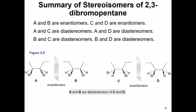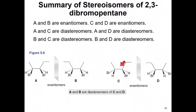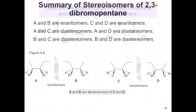If you analyze the structures, A and C are not mirror images and they're non-superimposable. A and D are not mirror images either, and they are non-superimposable. Same with B and C, and B and D — they are not mirror images of one another and they are non-superimposable. That's basically what makes them diastereomers of one another.